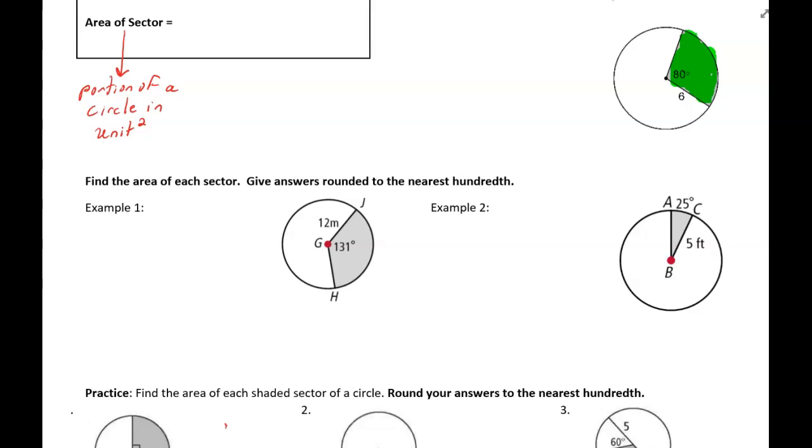So we just talked about arc length. Arc length was the central angle over 360 times the circumference. Well here if we want to find the area of a sector, we're going to multiply by the area.